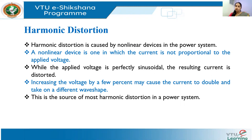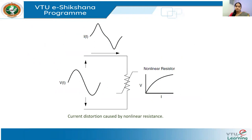Whereas with a non-linear load, the current will not be sinusoidal — it will be distorted. In fact, increasing the applied voltage by even one or two percent may cause the current to double and take on a completely different waveform. Let us look at an example of how this occurs.